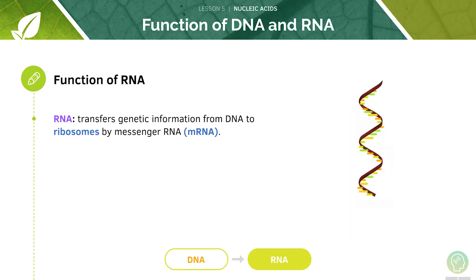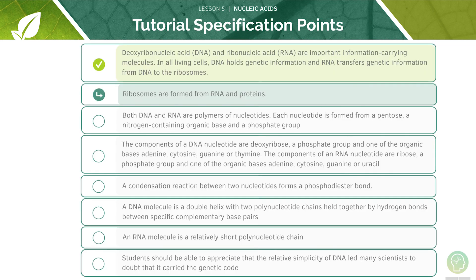RNA is responsible for passing genetic information from DNA to ribosomes. RNA is structurally similar to DNA. The main function of RNA is to transfer genetic information, which is done by messenger RNA. Now we'll cover ribosomes.